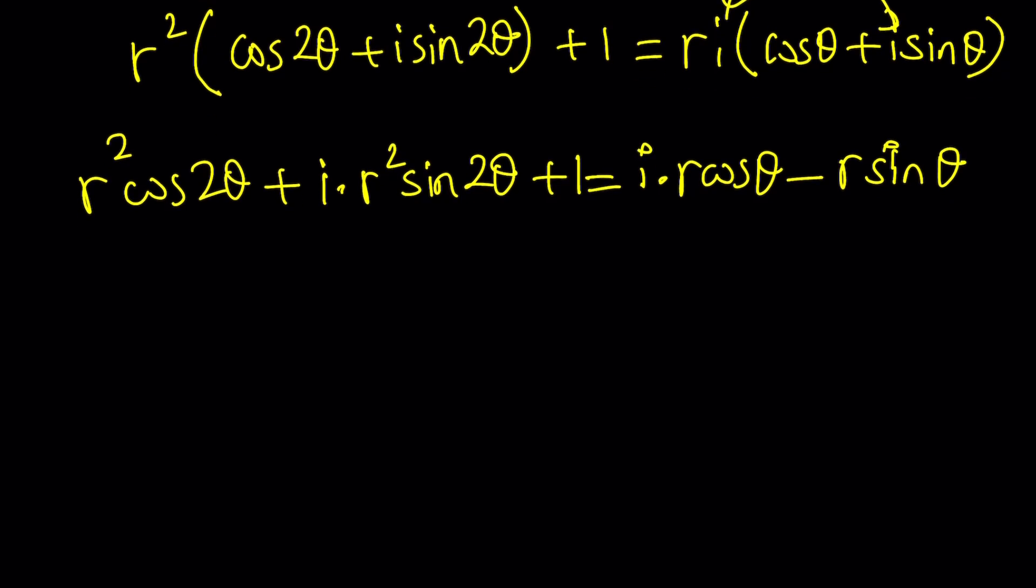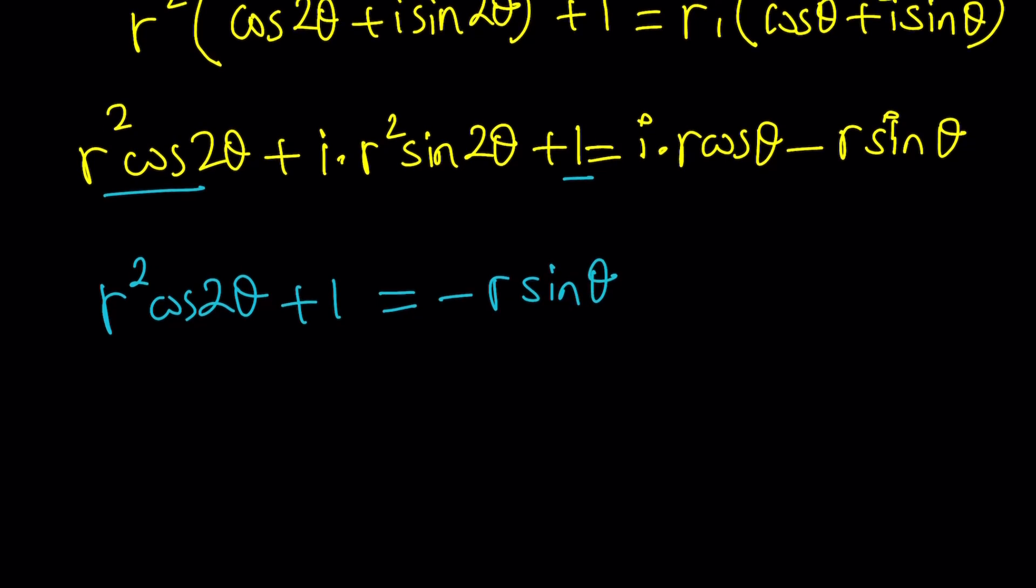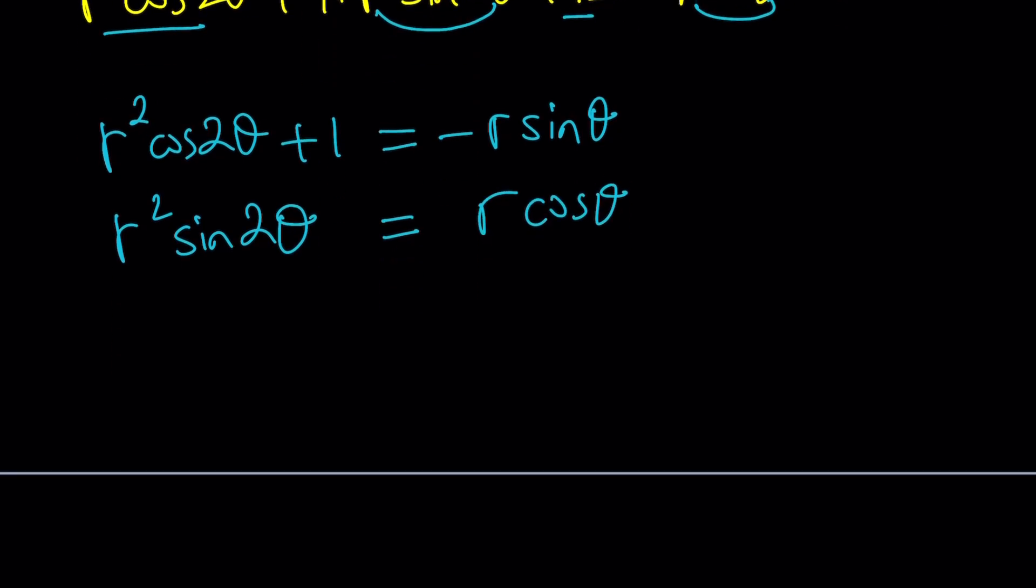We have a real part and an imaginary part. We have to compare those to each other. For example, on the left hand side, the real part is R² cosine 2θ plus 1. And on the right hand side, it's negative R sine θ. The imaginary part is the coefficient of i, which is R² sine 2θ on the left. And on the right, it's equal to R cosine θ. Interesting, right?